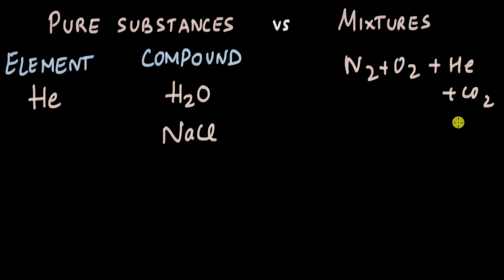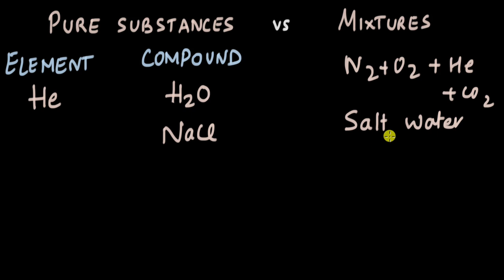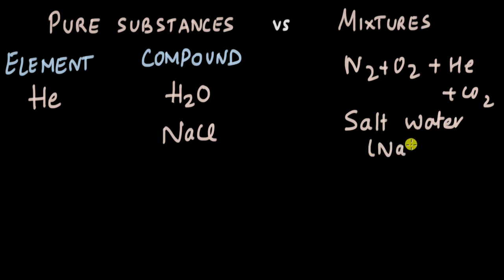These elements and compounds are mixing with each other to form a mixture. Let's take salt water — it's really NaCl, sodium chloride, mixed with water. Individually sodium chloride is a compound and a pure substance; individually water is a pure substance. But when two or more pure substances mix with each other they form a mixture, so salt water — NaCl plus H₂O — is a mixture.